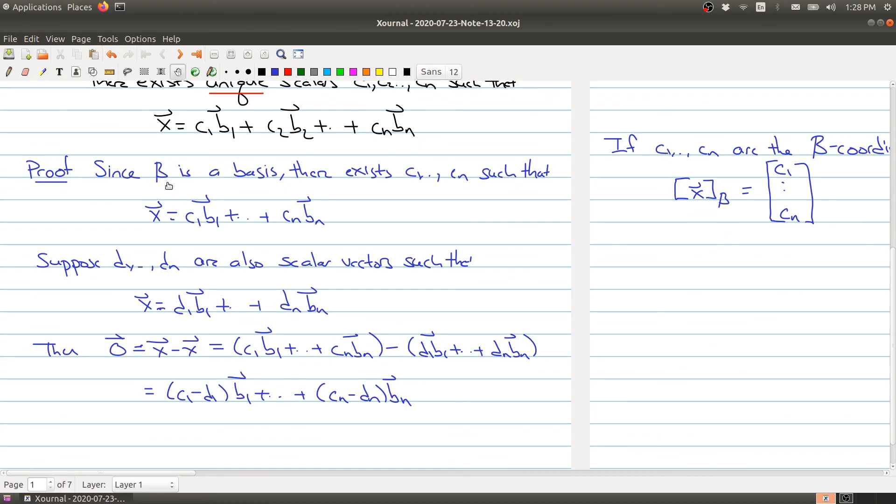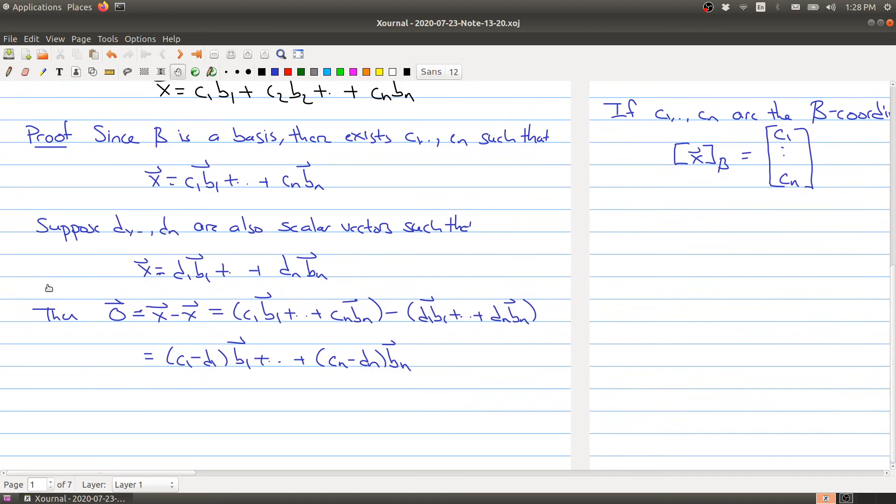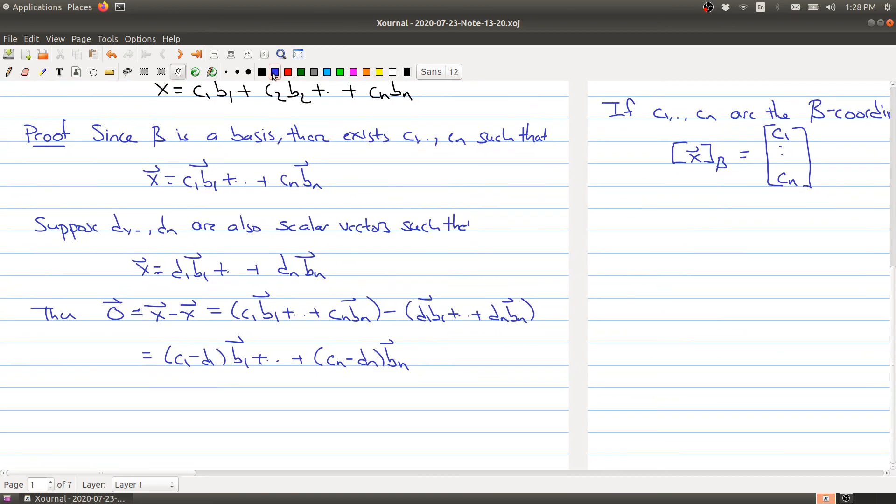So we've used the fact that B is a basis in only one spot, we've used the spanning property, and now we're going to use the property of the basis in another way, and that the bi's are all linearly independent. So since the bi's are linearly independent, and we have a linear combination going to zero, that means that each of these coefficients are zero. So ci minus di equals zero, for i going from one to n. So ci is equal to di for all i.